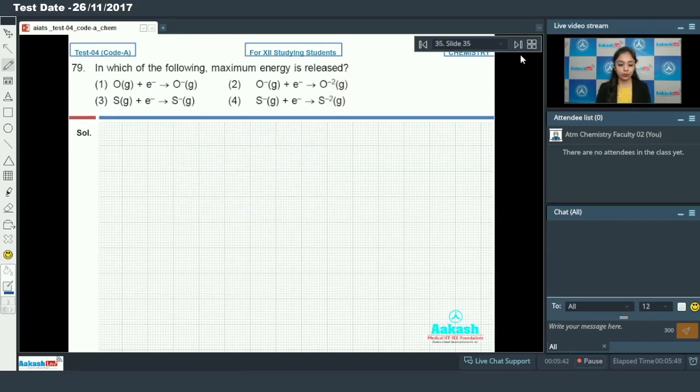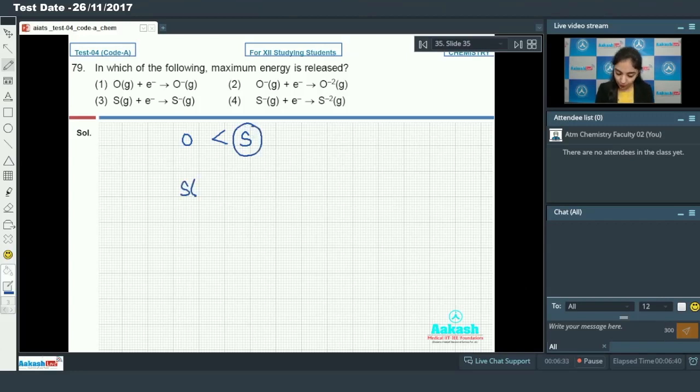Moving on to the next one. We have question number 79. It says that in which of the following maximum energy is released. In all of the four processes an electron is adding to the species. So if an electron is added to the species means it is talking about the electron gain enthalpy. In this case we have oxygen and we have sulfur. And you know that the sulfur has the higher electron gain enthalpy than the oxygen. Because due to the small size of oxygen when an electron is added to the oxygen it suffers repulsion. So the sulfur has the higher electron gain enthalpy. So if I talk about this process means the addition of electron to sulfur the highest energy will be released.